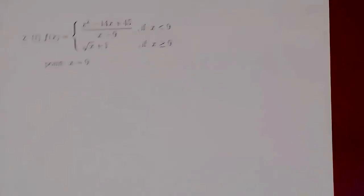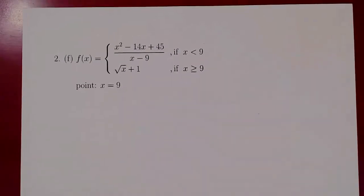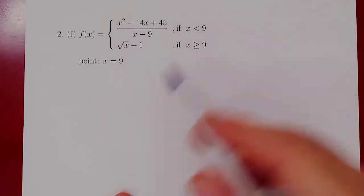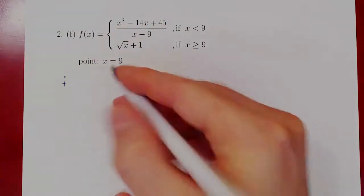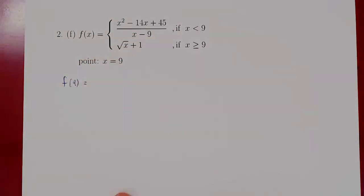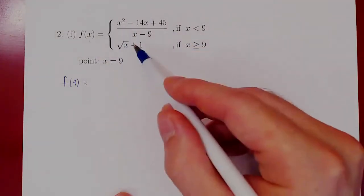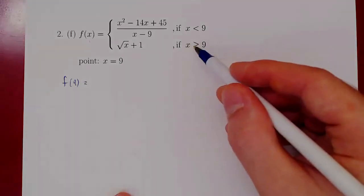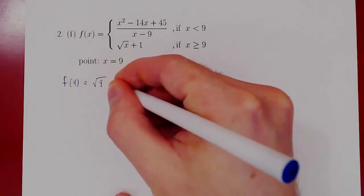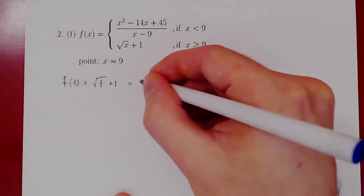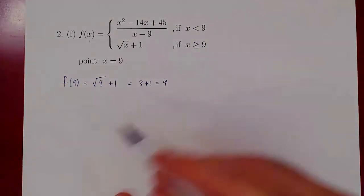Let's look now at problem 2F. Same question, different function, different point. The question is whether or not f(x), given by this function, is continuous at x equals 9. As before, the first question is: does f(9) exist? Well, when x is exactly equal to 9, we have two pieces for f. When x is greater than or equal to 9, f(x) is √x + 1. So this would be √9 + 1. The root of 9 is 3, so we get 3 + 1 = 4. So far so good — the function is defined at 9 and the value is 4.